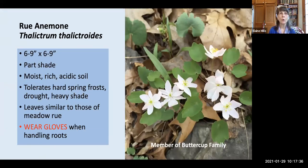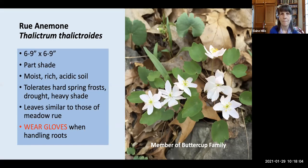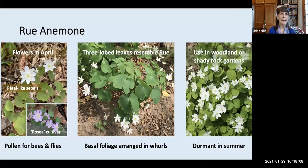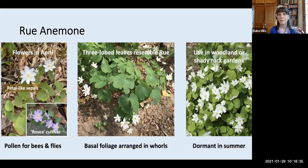Our next plant is rue anemone, Thalictrum thalictroides. It gets its common name because the flowers look like those of anemone and the leaves look like those of meadow rue. Despite its fragile appearance, it actually tolerates hard spring frosts, drought, and heavy shade. You'll want to wear gloves when handling the roots. Rue anemone flowers in April — what look like white petals are actually petal-like sepals, which can be pink in color with the rosea cultivar. The flowers provide pollen for bees, and the three-lobed leaves resemble the meadow rue. The basal foliage is arranged in whorls. It's a lovely plant for woodland or shady rock gardens, but it will go dormant in the summer.